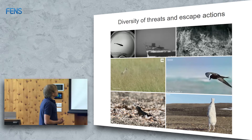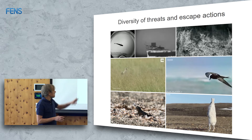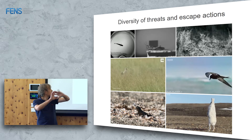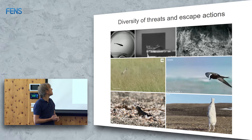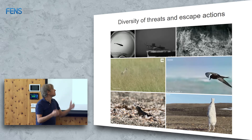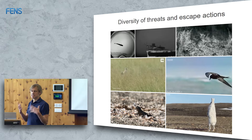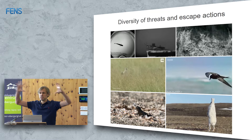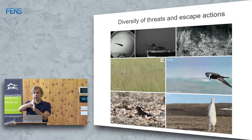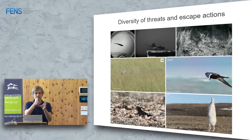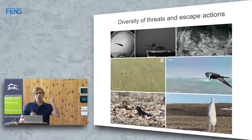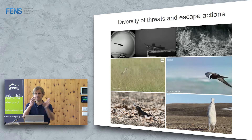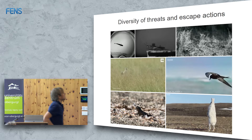The next example is a locust escaping from a looming stimulus approaching from the side. It jumps when the looming stimulus has reached a certain critical angle — this is very well understood. They always escape at the same critical angle, and they can compute exactly when the expected collision time is and then escape at a fixed time point before that.